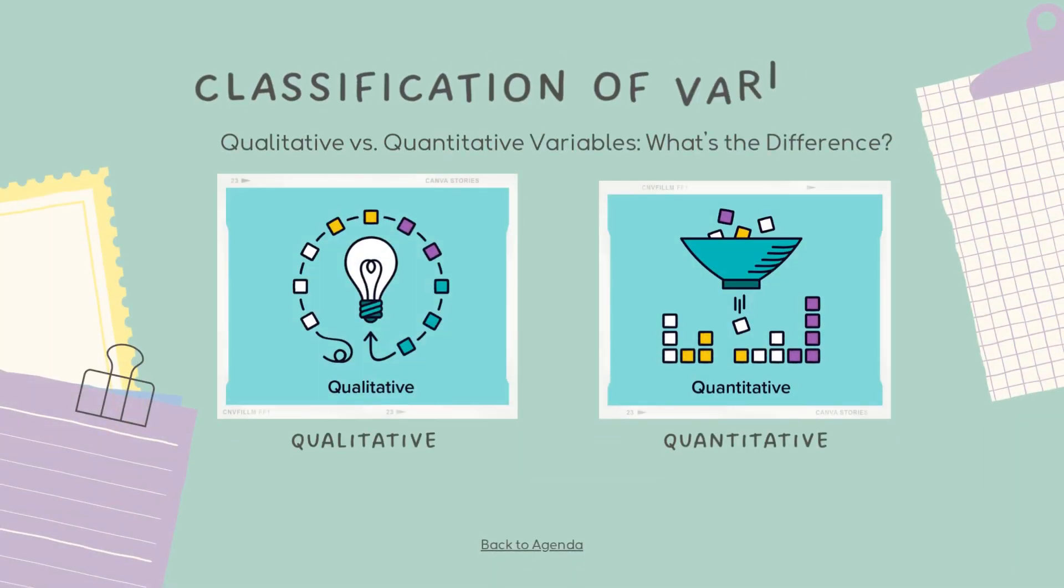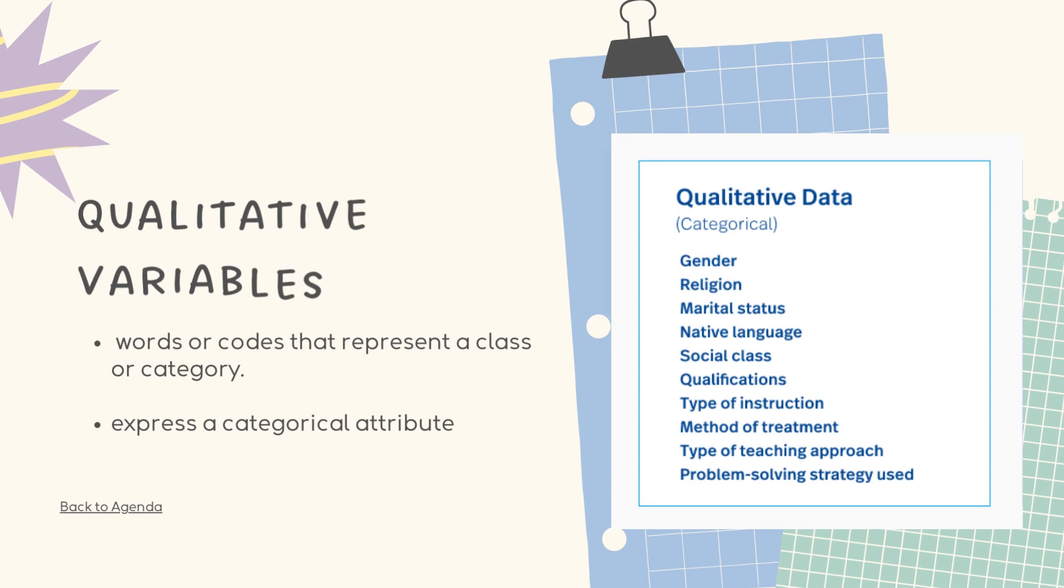Moving on. Classification of variables. Qualitative versus quantitative variables. What's the difference? Let's start with qualitative variables. Words or quotes that represent a class category express a categorical attribute. Sometimes it refers to categorical variables.